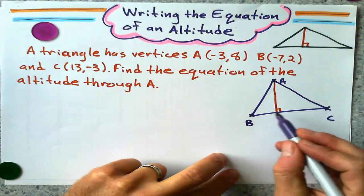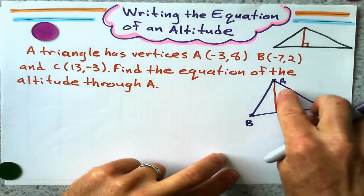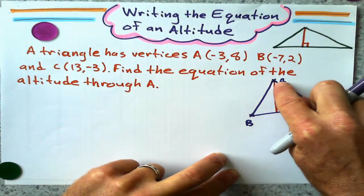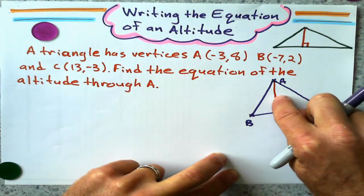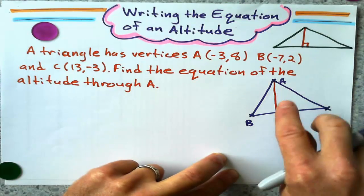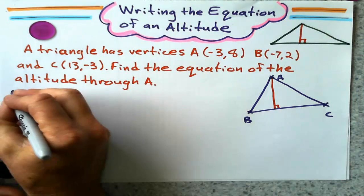So when I work out this problem, I kind of work backwards. And if I want the equation of this line, I need a point, which I have, A, and I need that line's gradient. Well, I don't know that line's gradient, but I can figure out the gradient of BC.